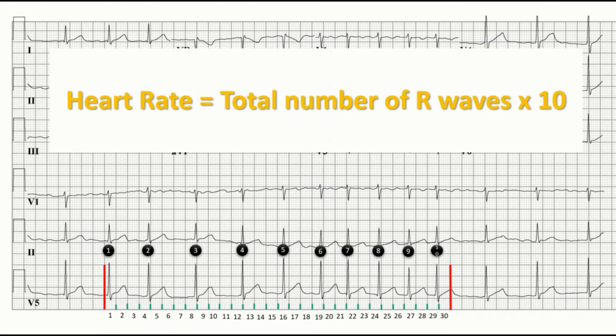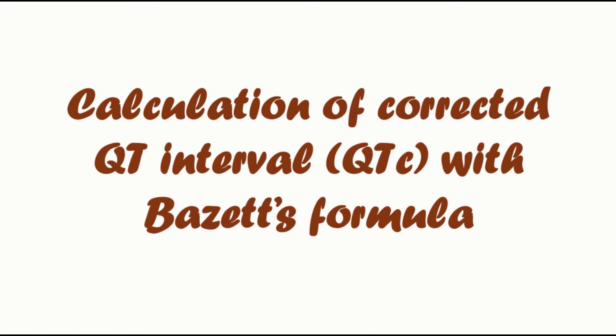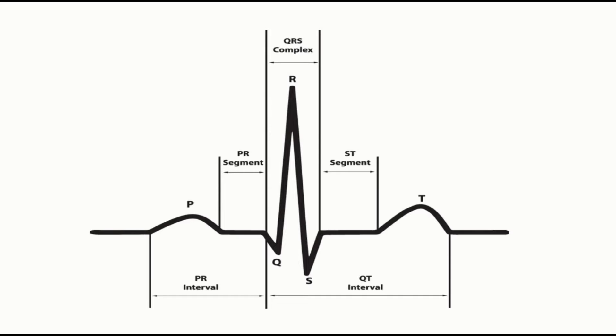Now in this video I am going to show you how to calculate the corrected QT interval on an electrocardiogram with the help of Bazett's formula. Bazett's formula is the most common method used for calculation of corrected QT interval. Before jumping on to the Bazett's formula, we shall first understand various segments and intervals on a normal electrocardiogram.